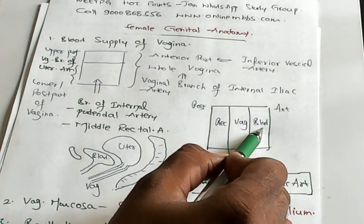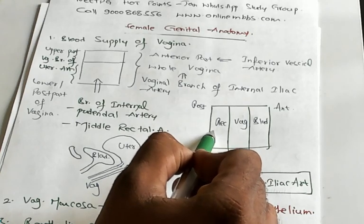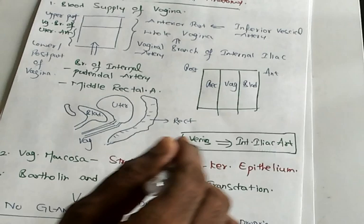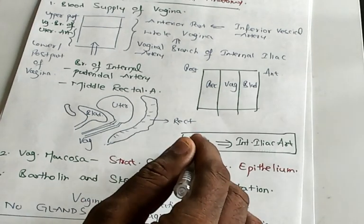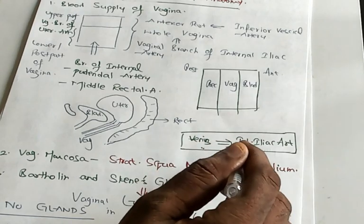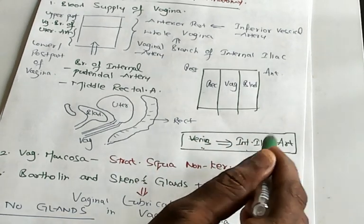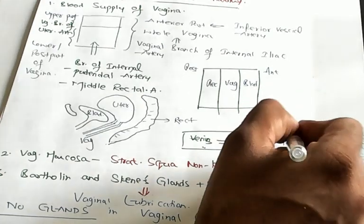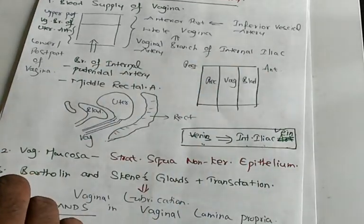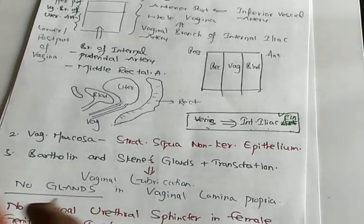Vagina in the middle, bladder in front, rectum behind, this is the basic anatomy you need to remember. Now, where are the veins? The veins draining the vagina, they all drain into internal iliac veins and uterine veins.